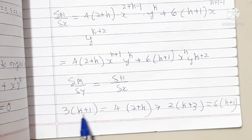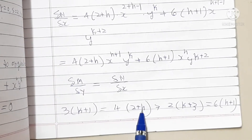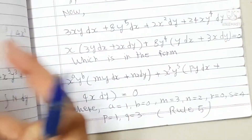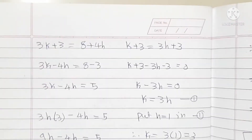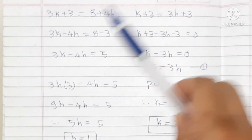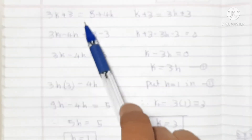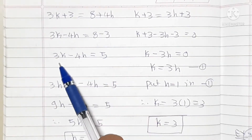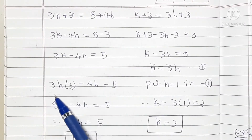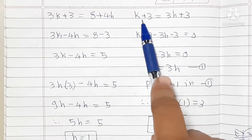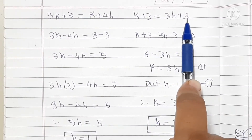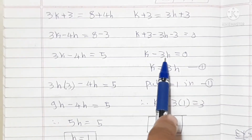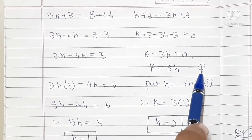Setting ∂M/∂y = ∂N/∂x and comparing coefficients: 3(k+1) = 4(h+2), which gives 3k − 4h = 5 (Equation 1). And 2(k+3) = 6(h+1), which gives k = 3h (Equation 2).